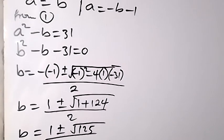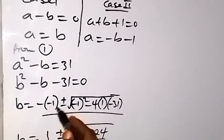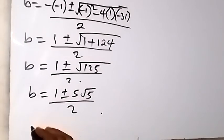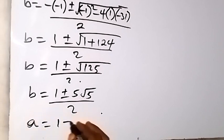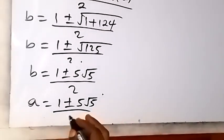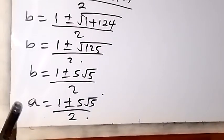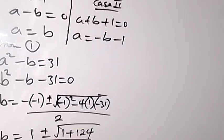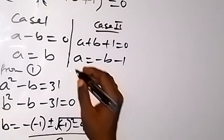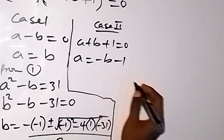Since a equals b in case 1, the value of a is also (1 ± 5√5) / 2. Now let's check case 2.